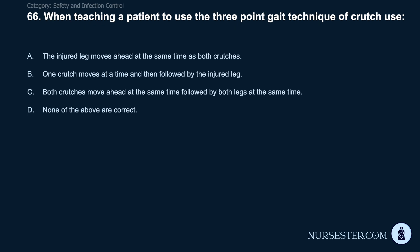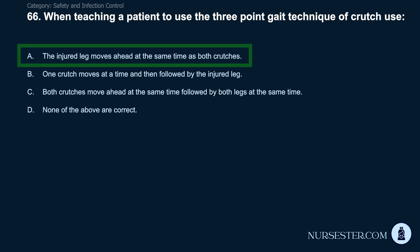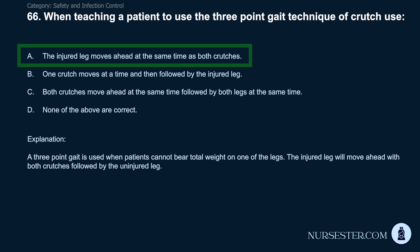Question 66: When teaching a patient to use the three-point gait technique of crutch use: A) The injured leg moves ahead at the same time as both crutches. B) One crutch moves at a time, followed by the injured leg. C) Both crutches move ahead at the same time, followed by both legs. D) None of the above. Correct answer: A. The injured leg moves ahead at the same time as both crutches. A three-point gait is used when patients cannot bear total weight on one leg. The injured leg moves ahead with both crutches, followed by the uninjured leg.